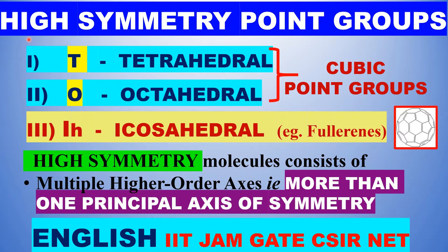Good morning. Let us study today high symmetry point groups — very high symmetry molecules. The point groups possessed by very high symmetry molecules are called high symmetry point groups. There are three types of very high symmetry point groups: one is tetrahedral, another is octahedral, and the third one is icosahedral.